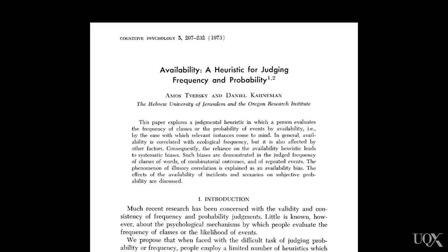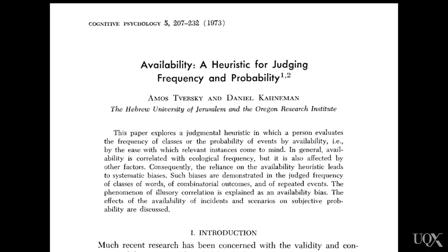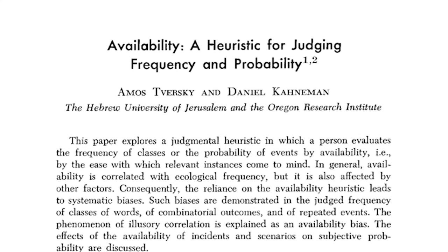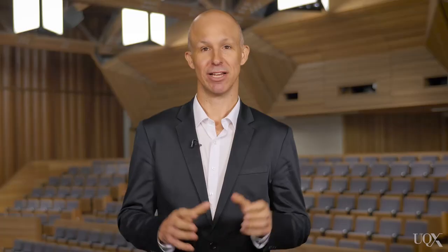The first heuristic that we're going to talk about is called the availability heuristic. This is when people judge an event's frequency by the ease with which they can bring examples of the event to mind. Let's try some examples to illustrate how this heuristic works.